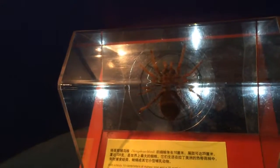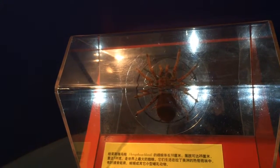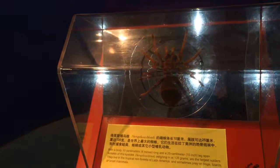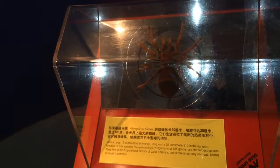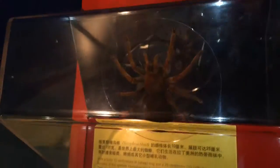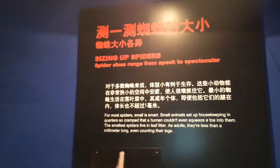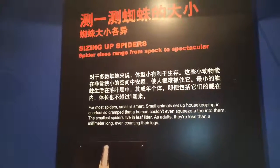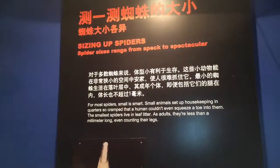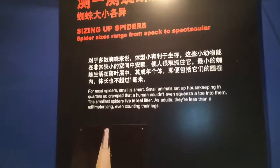Tallulah tarantula tells all — and sometimes preys on frogs, lizards, and small mammals. They're sometimes called the bird-eating spider. For most spiders though, it's small animals setting up housekeeping in quarters so cramped that a human couldn't even squeeze a toe in. Small spiders live in leaf litter; as adults they're less than a millimeter long, even counting their legs.